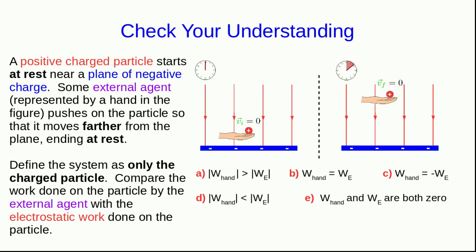Here's the question that I ended part one of this lecture with, and so let's resolve it now. The system is only the particle, and so the only kind of energy the system can have is kinetic energy, and that starts at zero and ends at zero, so the system's total energy has not changed.